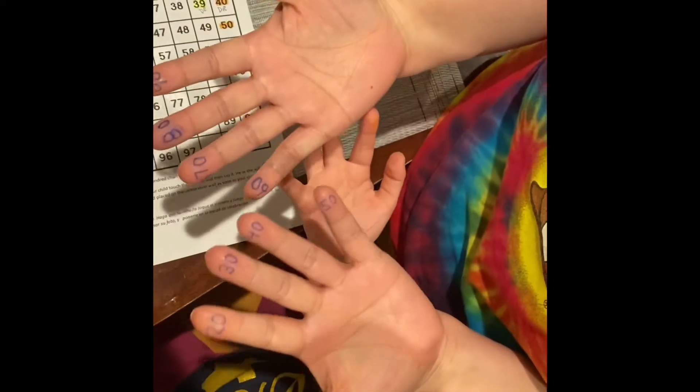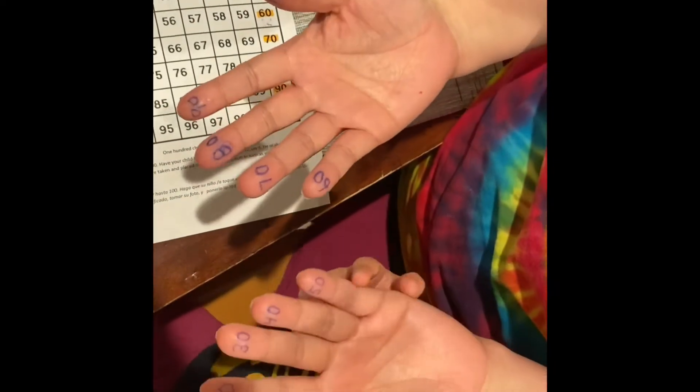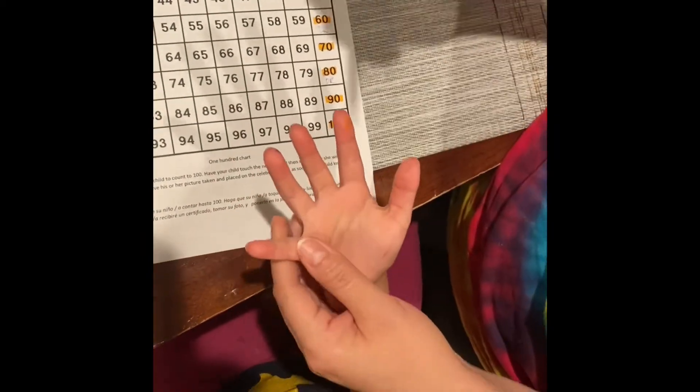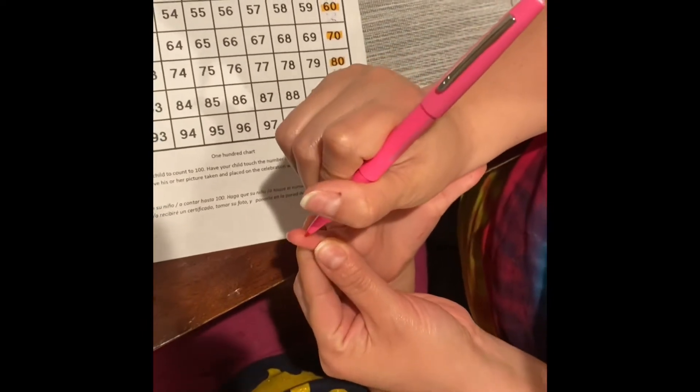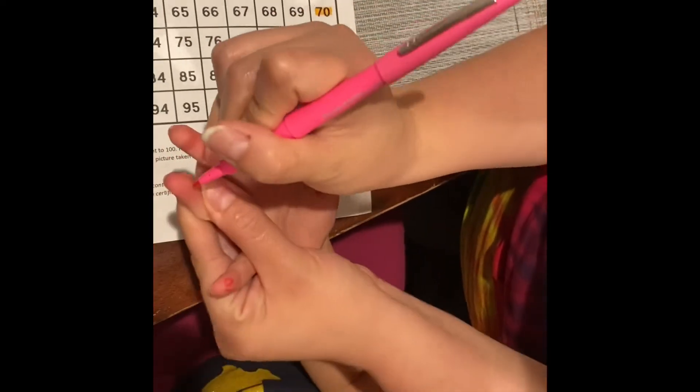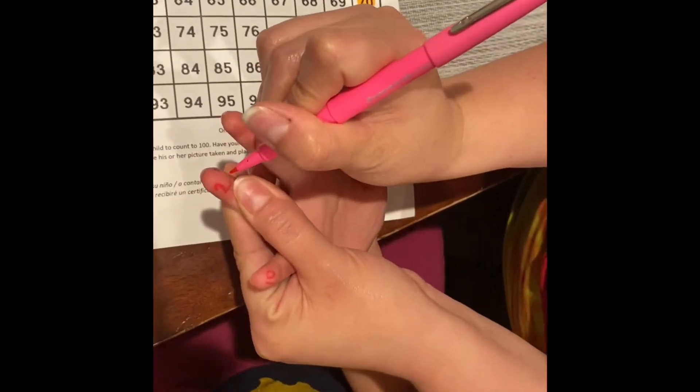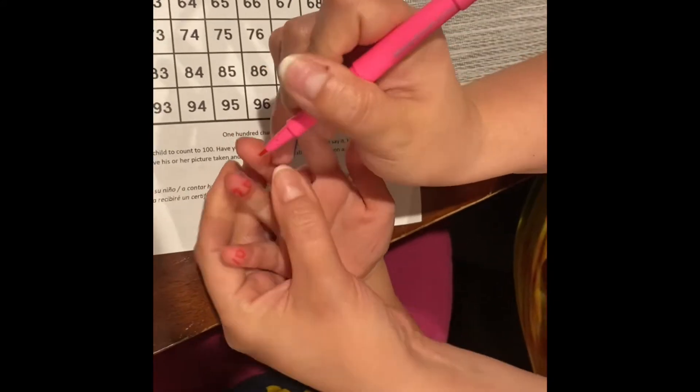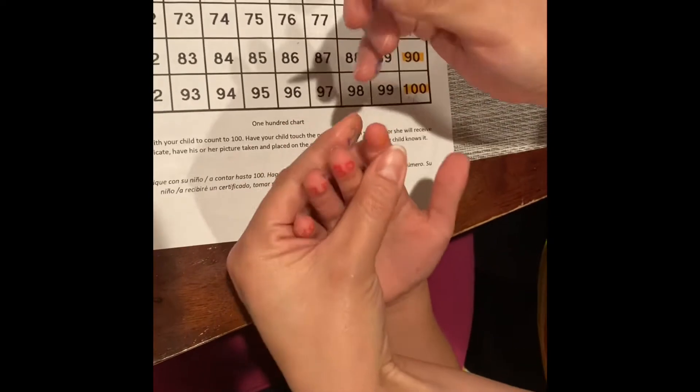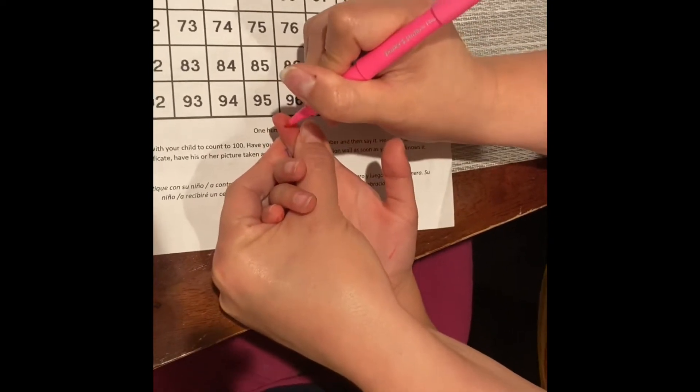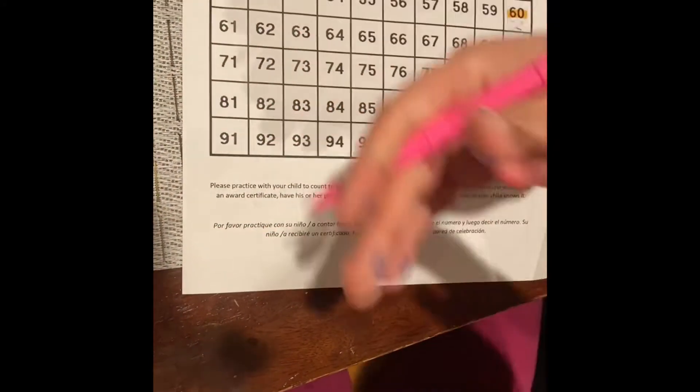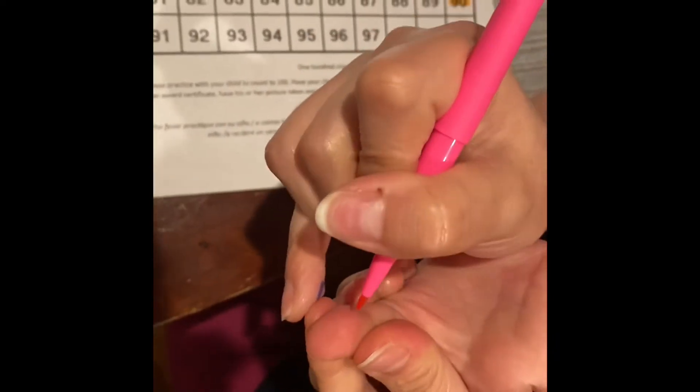Hi guys, this is part two. So I have the numbers on my fingers, and now your mommy will write your numbers on your fingers: 10, 20, 30, 40. Let me see your hand this way. 50.